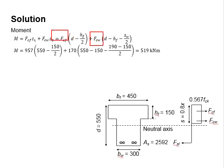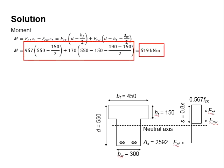FCF and FCW have already been calculated previously as 957 and 170 kN respectively. Z1 can be determined by subtracting D with half of the HF. As for Z2, it can be determined by subtracting D with HF and minus half of the SW. Substitute the relevant values into the equations. You obtain the moment capacity given by the area of 2592 mm² is 519 kNm.